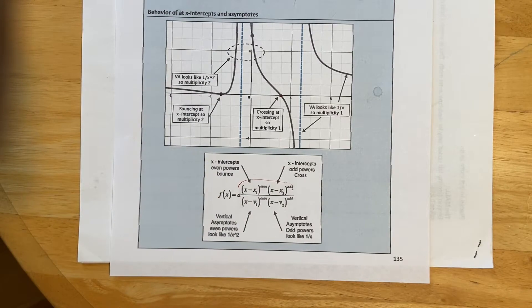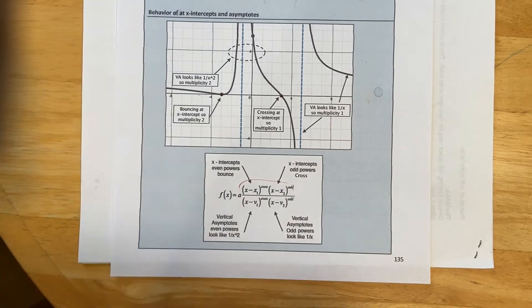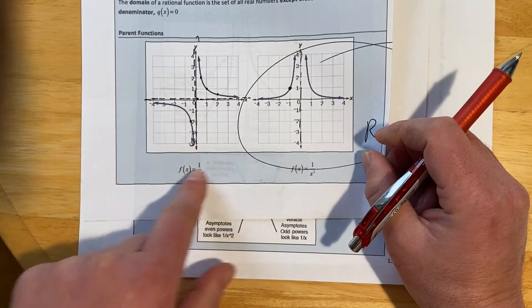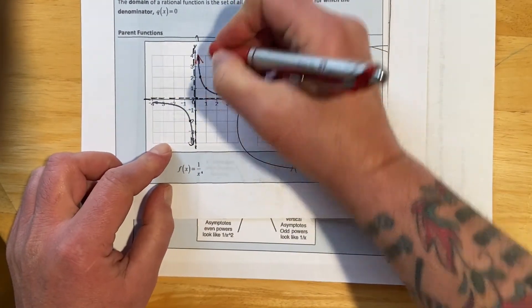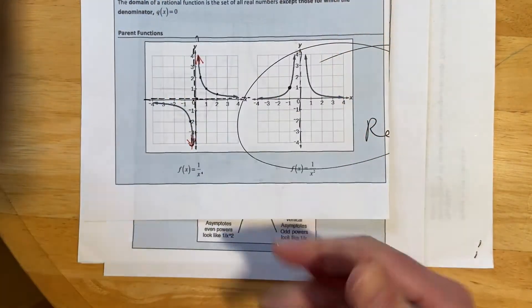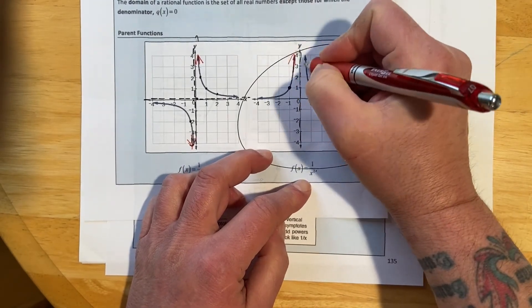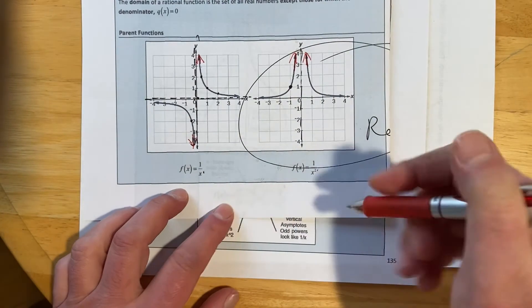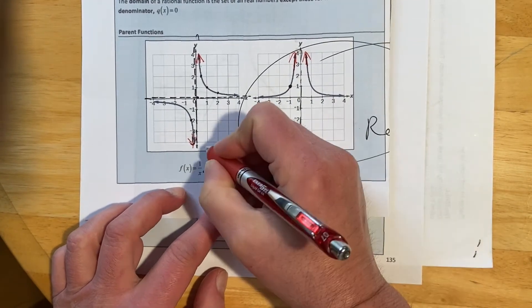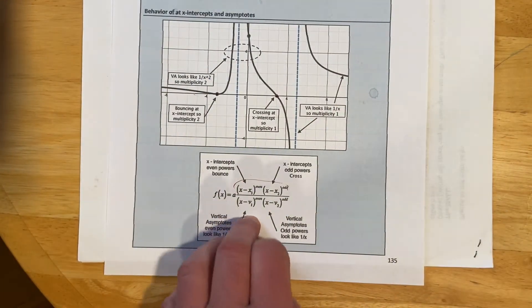And then the vertical asymptotes, the denominator, does the same thing. So if you remember back in the first video, we had our two parent functions, 1 over X where our graph went opposite directions at the asymptote, and then 1 over X squared where the graph went together, went in the same direction at the asymptotes. So this is even powers and this is odd powers, but it's going to be in the denominator is where we're looking for that.